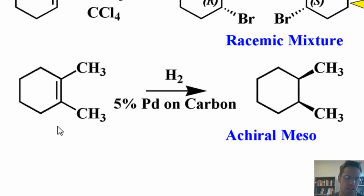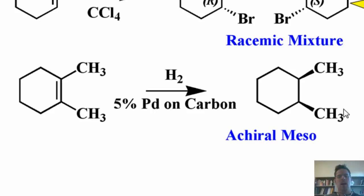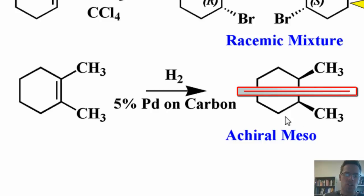Let's take a look at another example. Imagine that I took dimethyl cyclohexene and treated it with hydrogen and palladium on carbon — these are hydrogenation conditions. As we learned in an earlier chapter, these conditions always place the hydrogens on the same side, giving me a cis-dimethyl cyclohexane. If we look at this molecule, you'll note that I could draw a line directly down the middle of it between these two methyl groups, and what would appear on one side of that line would be the mirror image of the other side. This molecule is a meso compound and is hence completely achiral.